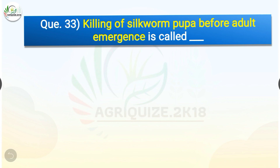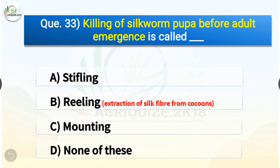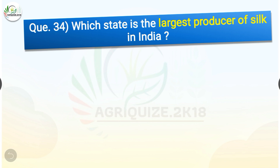Question number thirty-three: Killing of silkworm pupa before adult emergence is called what? The options are: stifling, reeling, mounting, or none of these. The correct answer is option A — stifling. Killing of silkworm pupa before adult emergence is called stifling. Whereas reeling is the extraction of silk thread from cocoons.